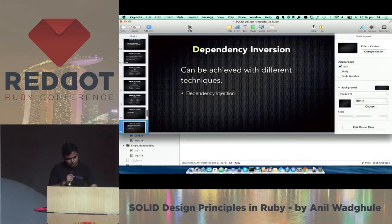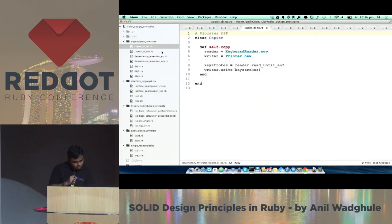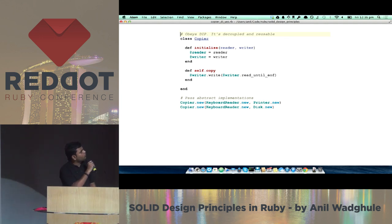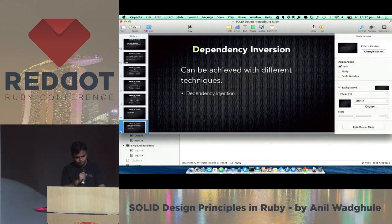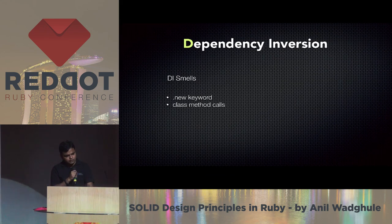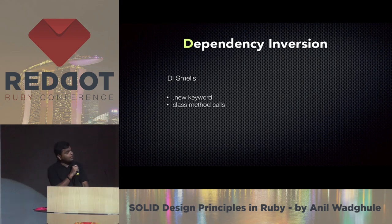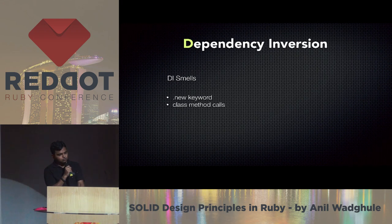The updated code uses these abstractions, and tomorrow we can change printer to disk easily. Common smells of violating this principle are the new keyword — if you see it in your code, there's a chance to apply dependency inversion. Also, direct static or class method calls break this principle.